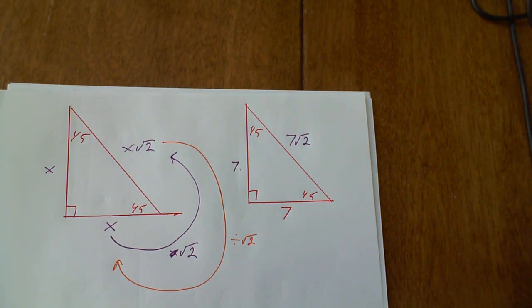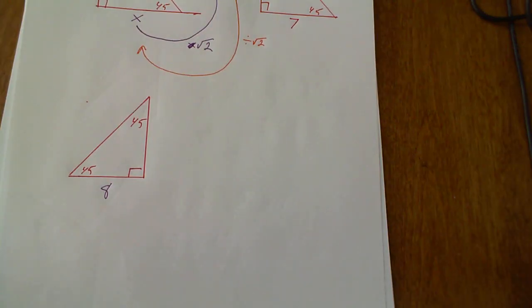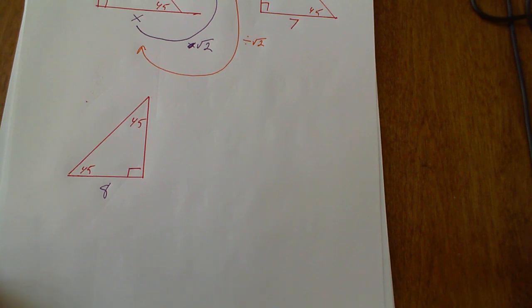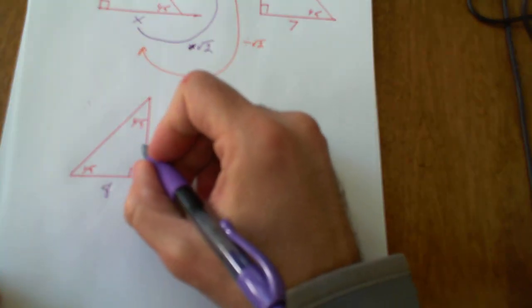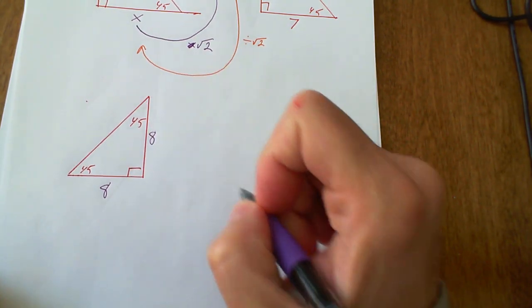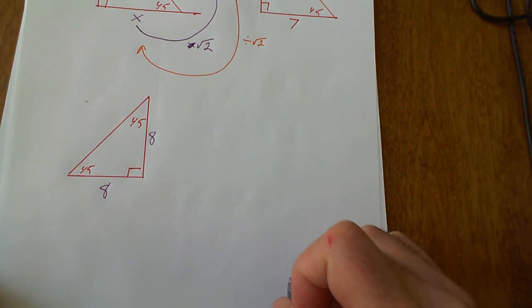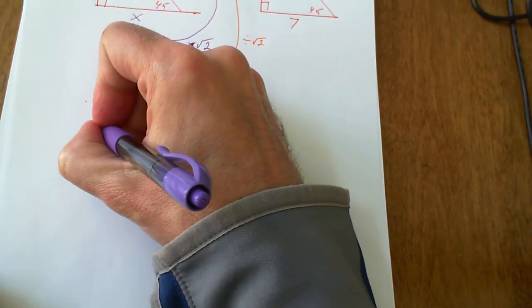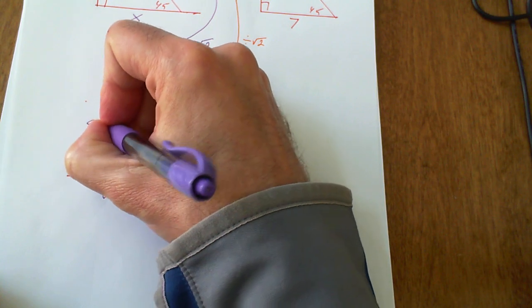Here's a 45-45-90 triangle — one of the 45 sides is eight. Go ahead and pause and see if you can solve the other sides. Since these sides are congruent, this is also eight. My hypotenuse is going to be eight times the square root of two.